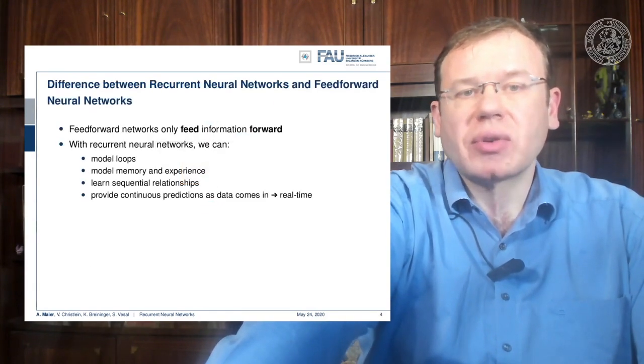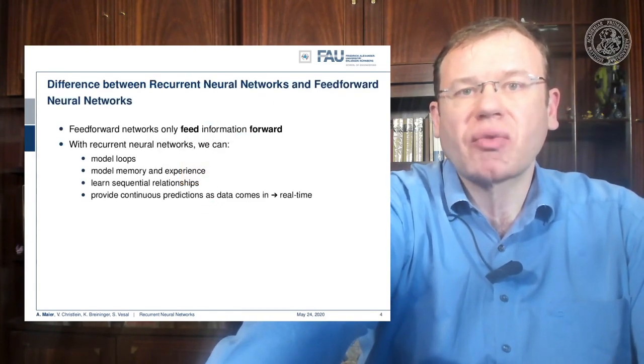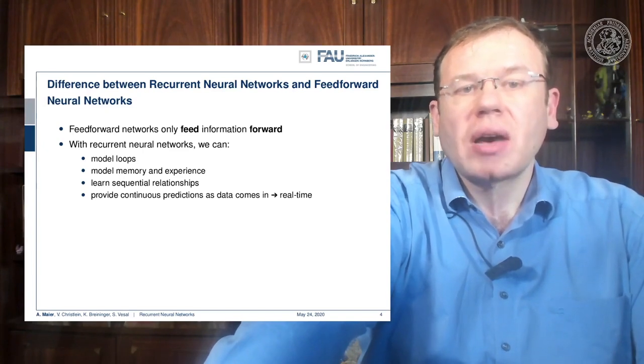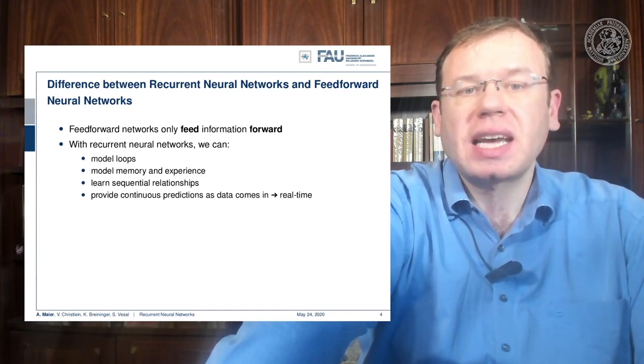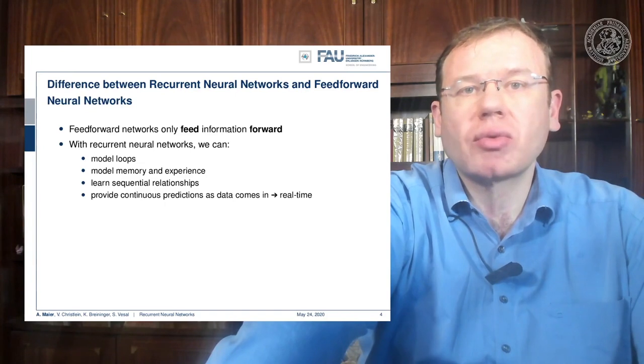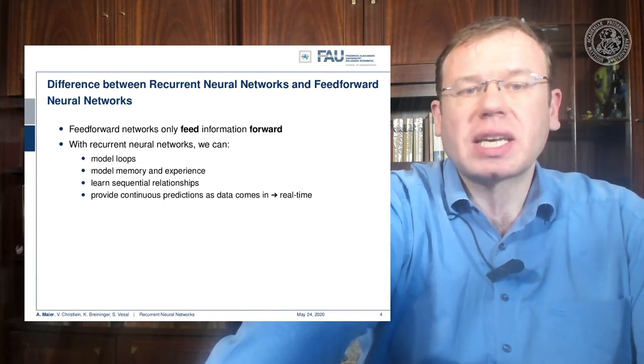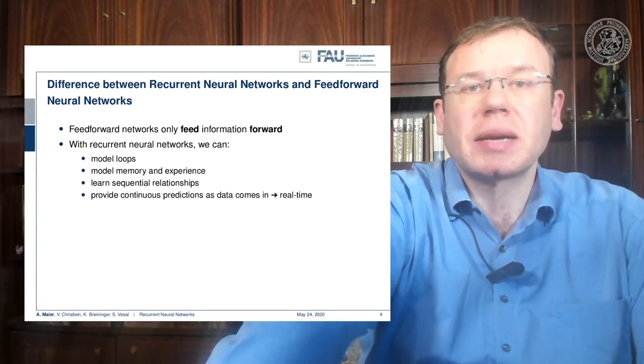Now, feedforward networks only feed information forward. So with recurrent networks, in contrast, we can now model loops, we can model memory and experience, and we can learn sequential relationships. So we can provide continuous predictions as the data comes in, and this enables us to process everything in real-time.